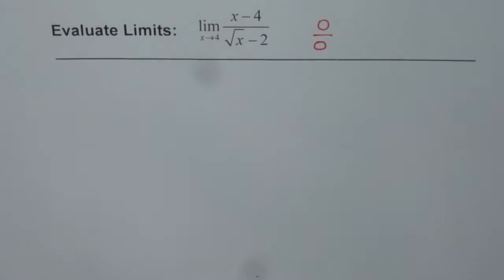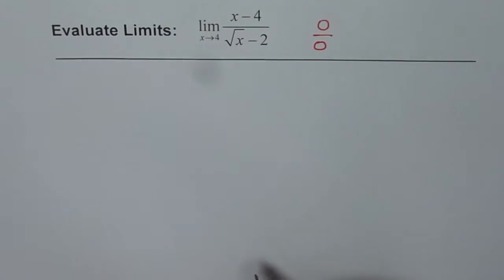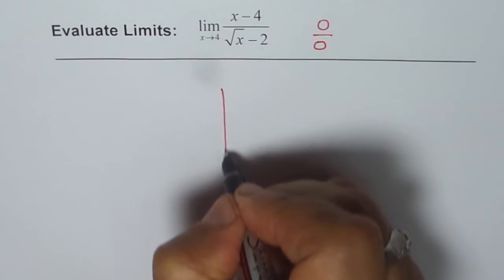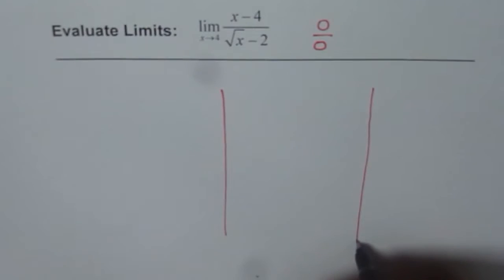0 over 0 is meaningless; we say it is indeterminate. And so we need to apply some techniques to further find the limit. Simple substitution of 4 did not solve our problem. Let me just divide it like this.